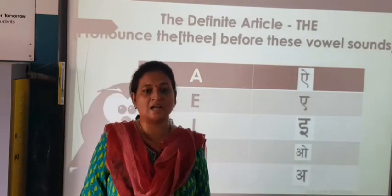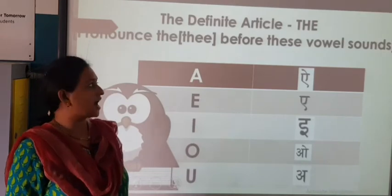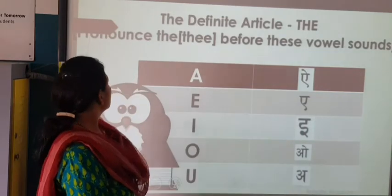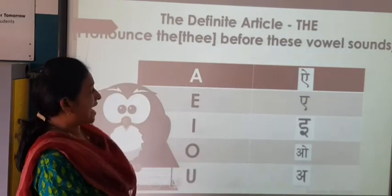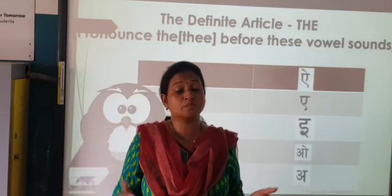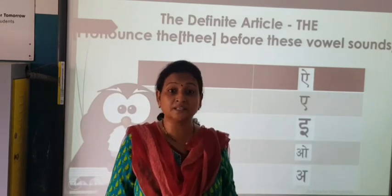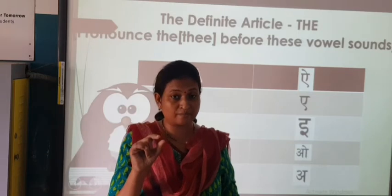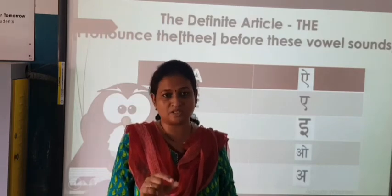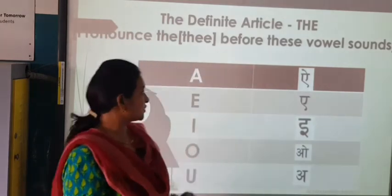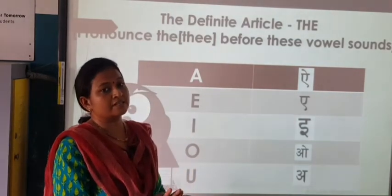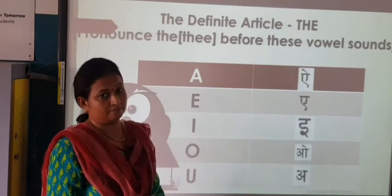That was the end of the indefinite article. Now we will be doing the definite article. In the definite article, we have only one — that is 'the'. Pronounce 'the' as 'thee' before vowel sounds. This is very important: if a vowel word is there and before it 'the' comes, then you will be pronouncing it as 'thee'. So if any word is starting with a vowel sound, and before it 'the' is there, you pronounce it as 'thee'.